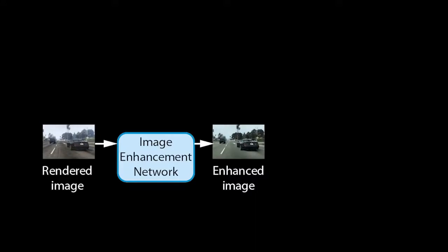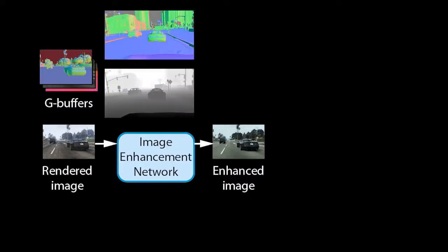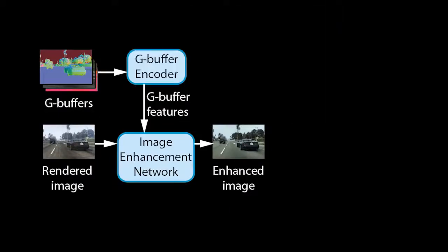Let us now look at our method in detail to understand why it is more stable and produces fewer artifacts. Our method takes a rendered image from the game and passes it through an image enhancement network to produce an enhanced image. We further extract a set of rendering buffers, called G-buffers, produced by the game engine. G-buffers contain geometric information such as surface normals or distance to the camera, material information such as albedo or glossiness, and may also contain information about the lighting in a scene. We pass the buffers through a G-buffer encoder network to produce feature tensors at multiple scales, which encode the information about the rendered scene.